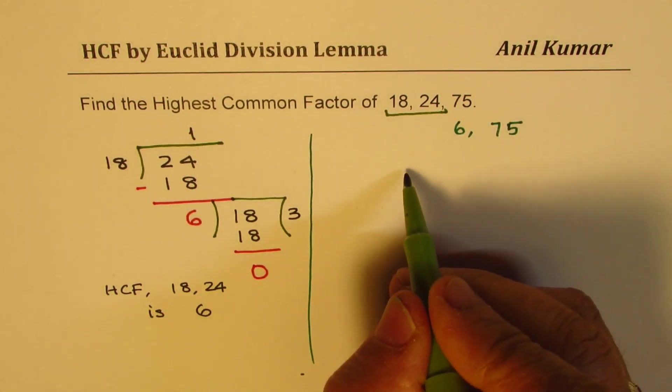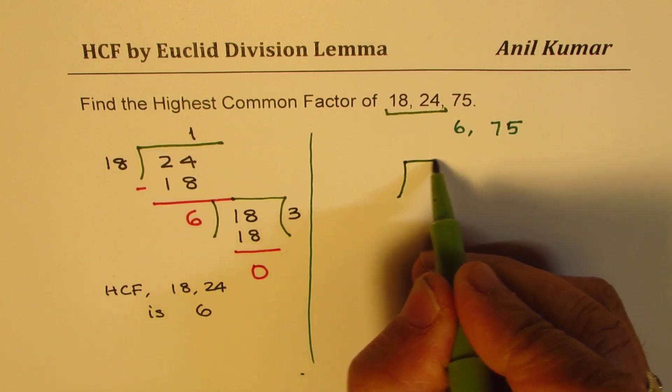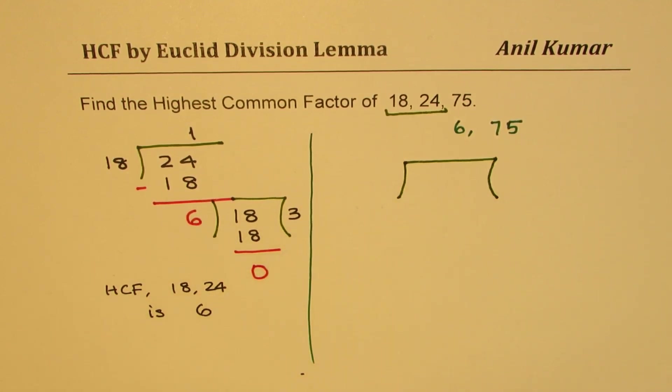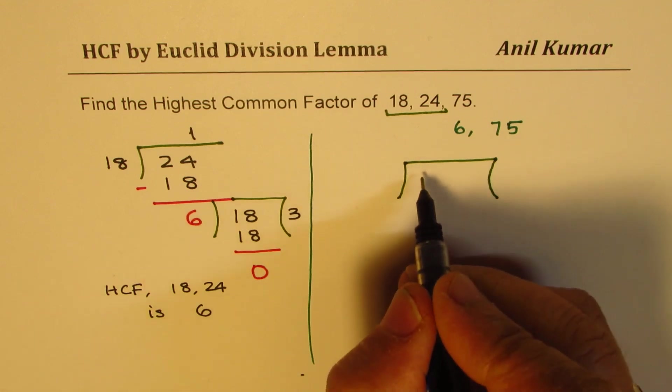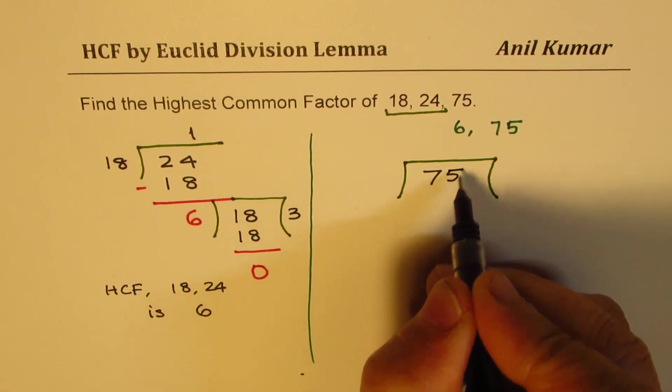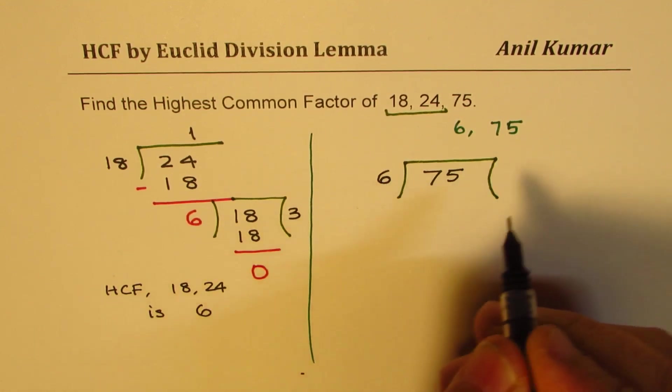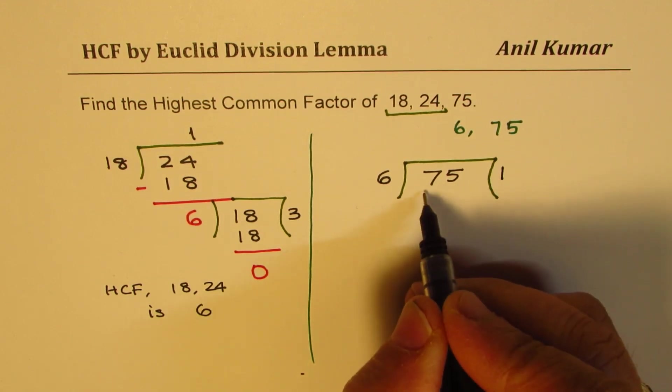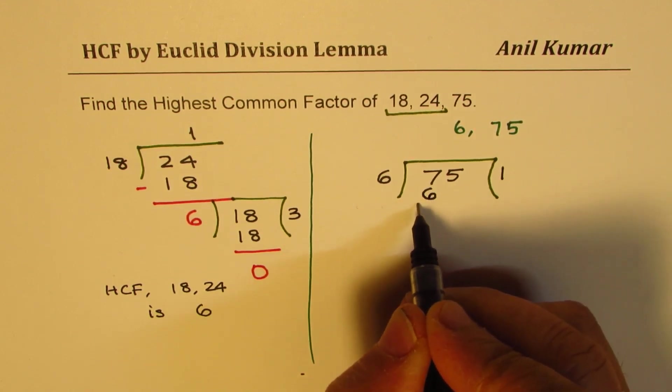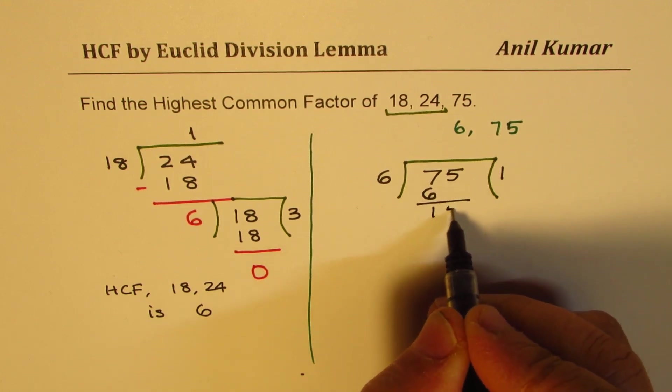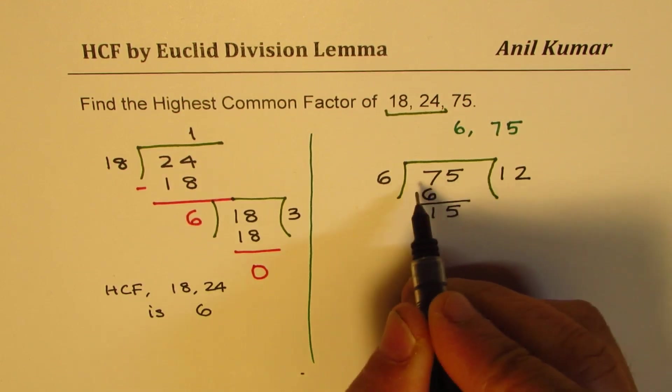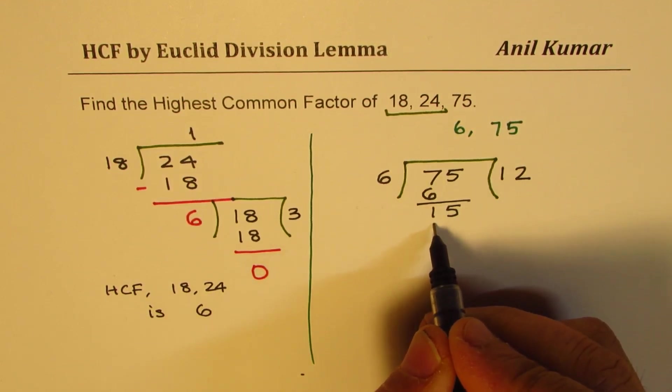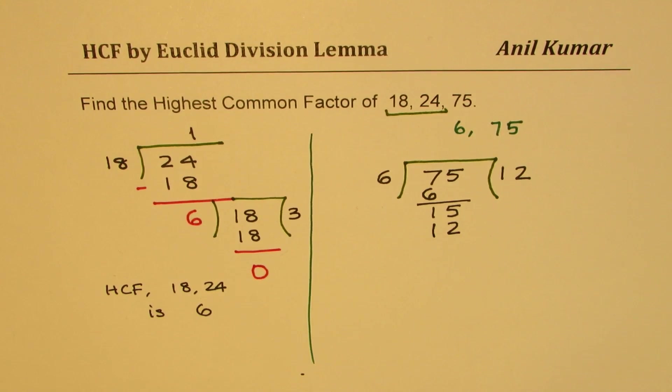So we'll divide 75 by 6. So we have this number 75. We are going to divide it by 6. Now 6 times 1 is 6. You can do it in 2 steps. So you get here 15 and then 6 times 2. That means 6 times 12 could have been tried. 6 times 2 is 12.